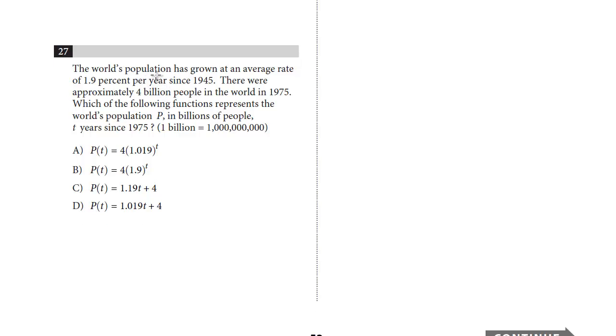The world's population has grown at an average rate of 1.9% per year since 1945. There were approximately 4 billion people in the world in 1975. Which of the following functions represents the world's population P in billions of people, T years since 1975? 1 billion equals 1 plus 9 zeros.